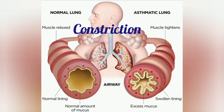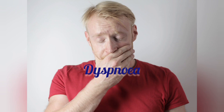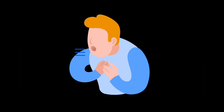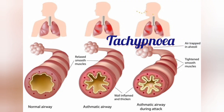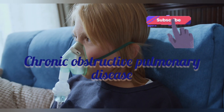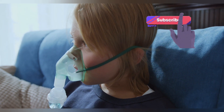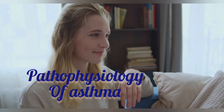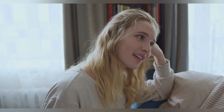Asthma is characterized by difficulty in breathing — that is dyspnea — cough, and wheezing, which is an abnormal sound during breathing, accompanied by increased mucosal secretion and increased respiratory rate, that is tachypnea. Asthma, cough, and chronic obstructive pulmonary disease (COPD) are some of the common respiratory diseases.